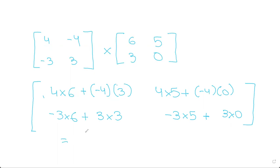Now if we solve this, we get 12 because 24 minus 12 is 12. And now here you get minus 18 plus 9, which is minus 9. And here you get 20 plus 0, which is just 20. And then finally here you get minus 15, as minus 15 plus 0 is just minus 15. That's how easy it is.